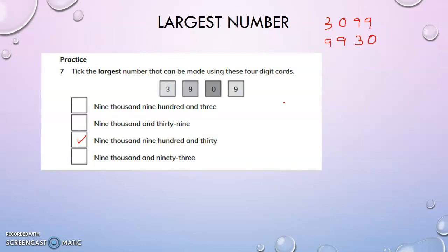I hope it is clear. Arranging in ascending and descending order we have done in our previous lessons. Look for the digit in the highest place value — whichever is largest, that is the biggest number. If they are equal, go to the next place value to find the highest number. That is how we find the largest number.